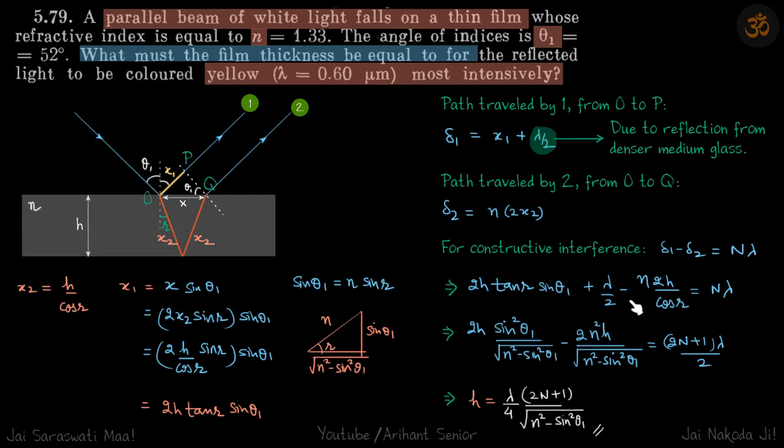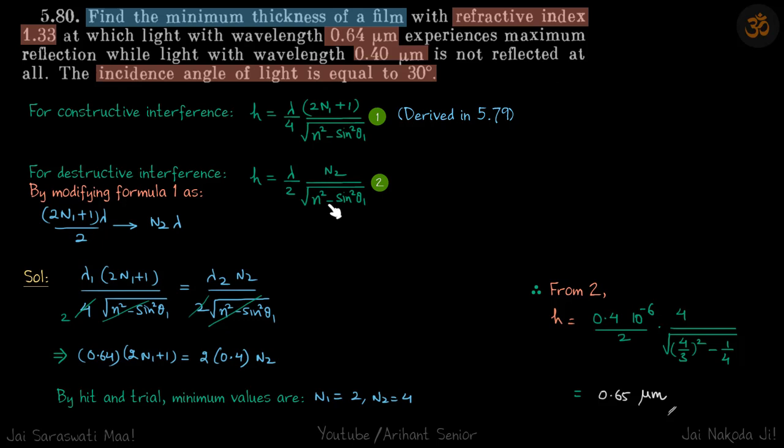If you have doubt, just go through the previous problem 5.79 and put the value 2n plus 1 lambda by 2, and you will see that for destructive interference, our thickness of the film will be modified by replacing 2n plus 1 lambda by 2 with n times lambda.